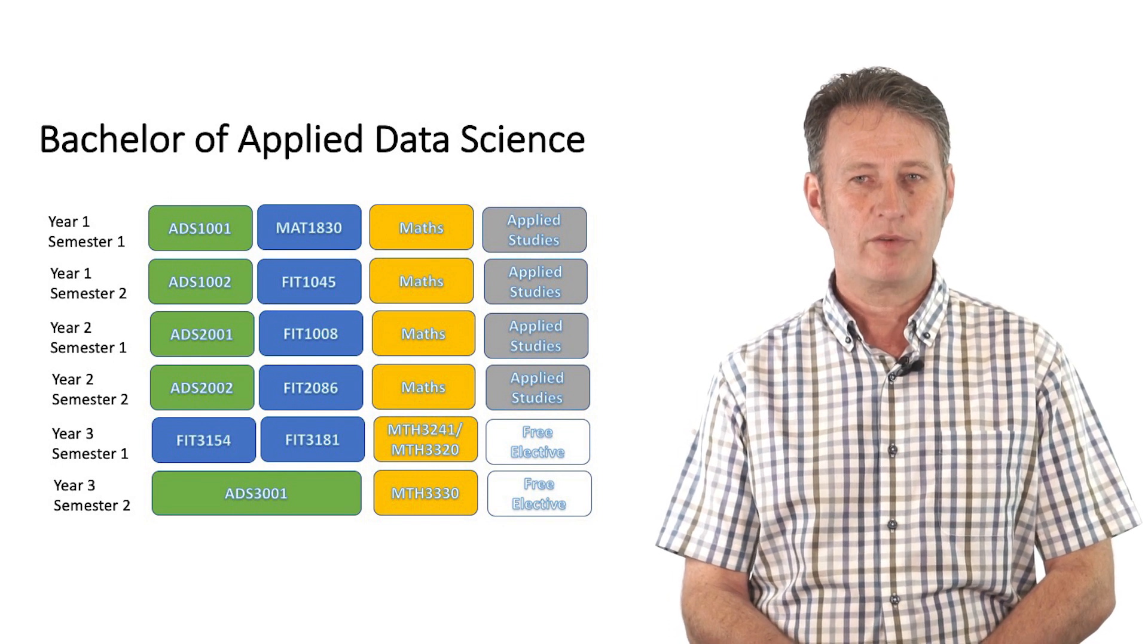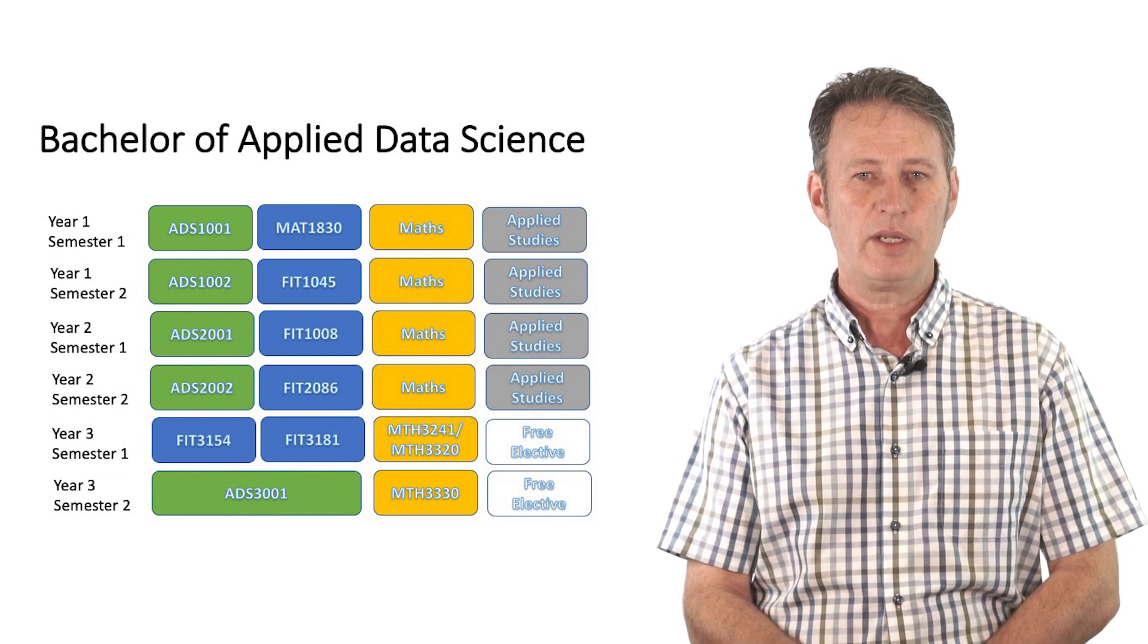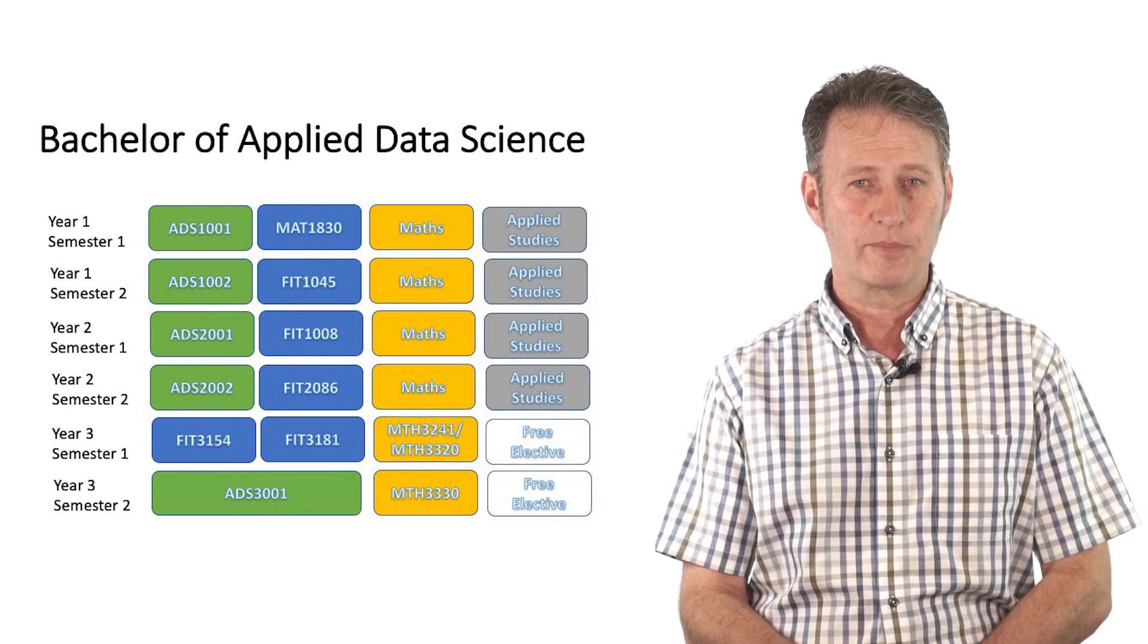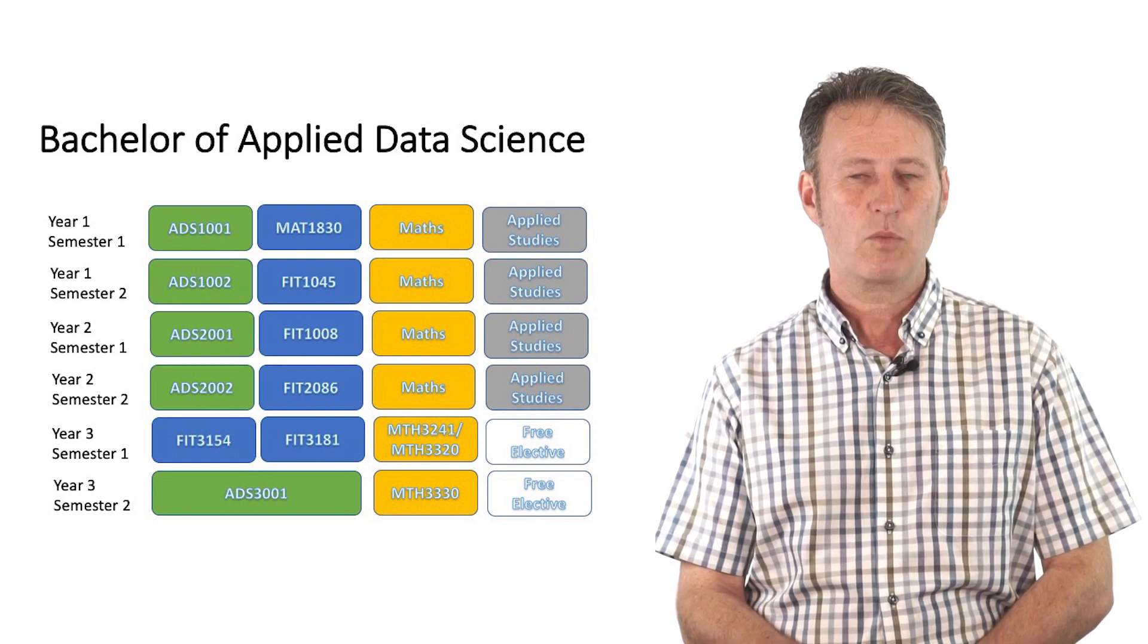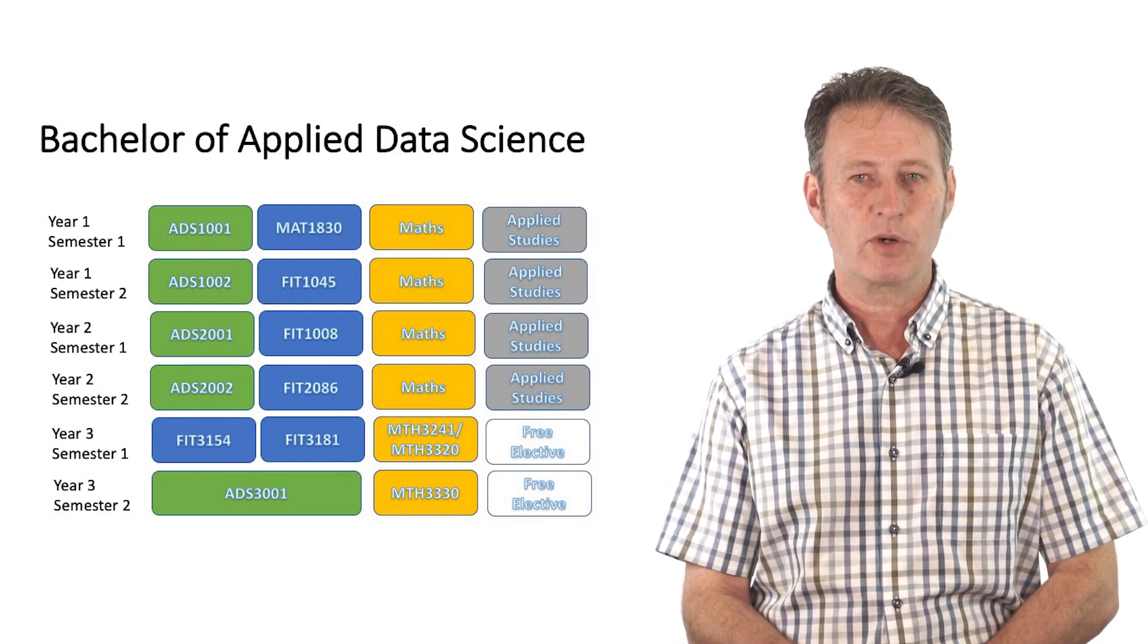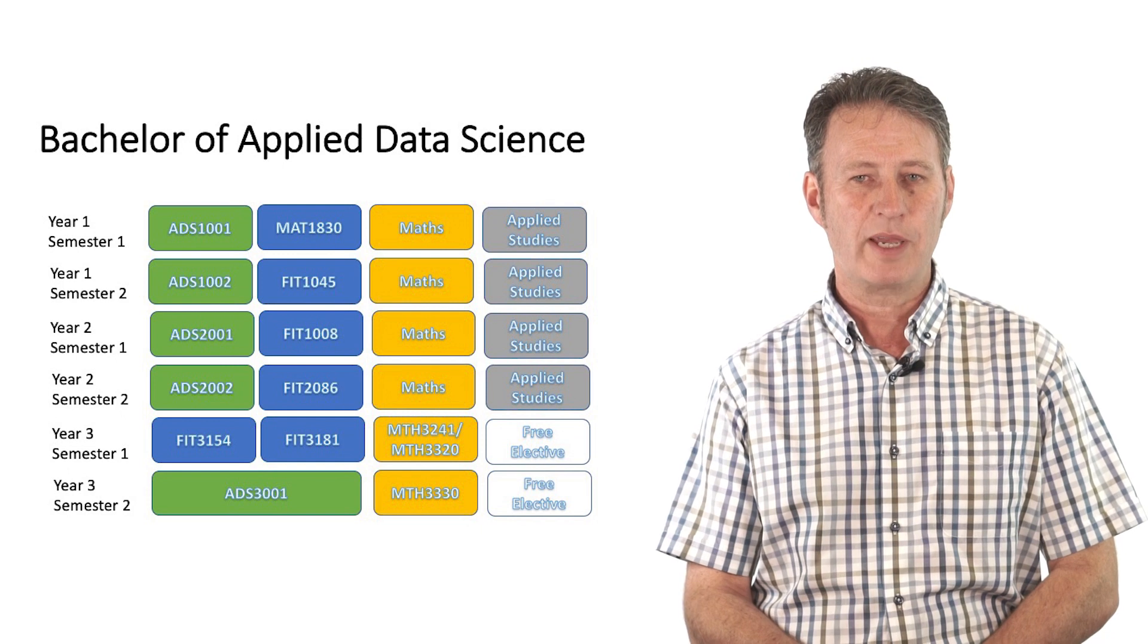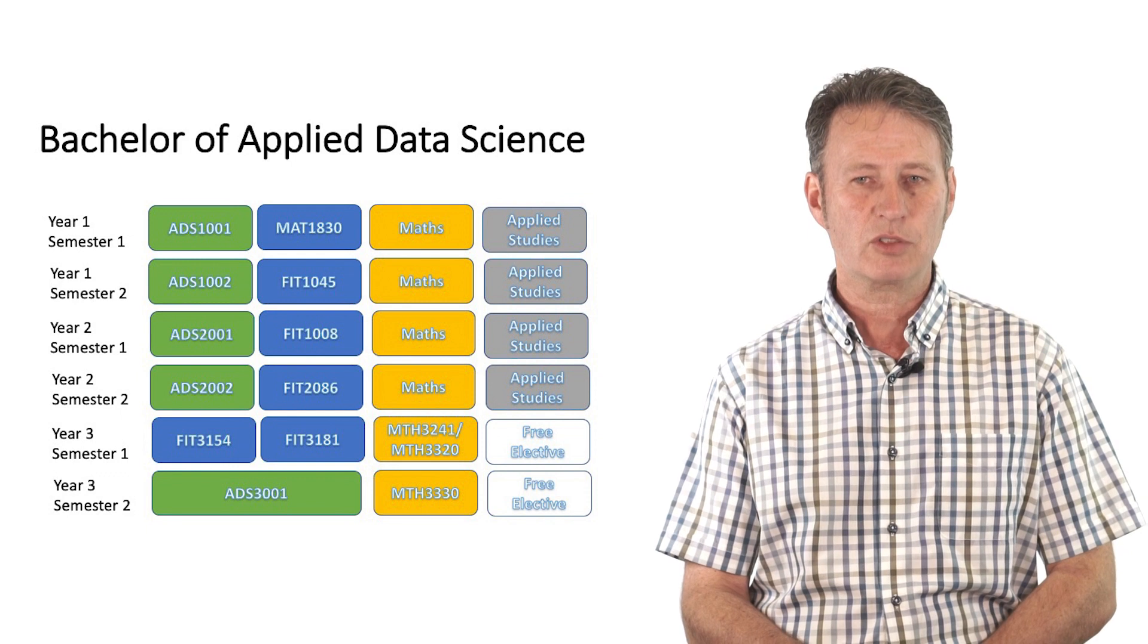What's shown now is the course map for the Bachelor of Applied Data Science, which is over three years. Each year is broken up into two semesters. The first semester starts in March and the second semester starts in July. To complete the Bachelor of Applied Data Science, you need to complete 144 credit points and this is typically broken up into six-point units. So in each semester you have to take four of these six-point units, apart from your final semester where you take a 12-point Advanced Data Challenges unit and two six-point units.